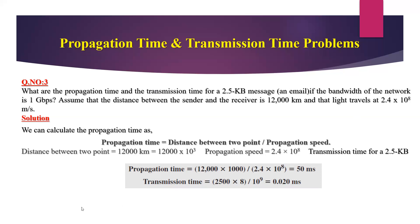Now we calculate the transmission time. The message size is 2.5 KB. Kilobyte means multiply by 1000, giving 2,500 bytes. Then multiply by 8 because one byte equals 8 bits, giving 2,500 × 8 bits. Divide by 10⁹ because the bandwidth is 1 Gbps — gigabits is represented as 10⁹. The final answer is 0.020 milliseconds.